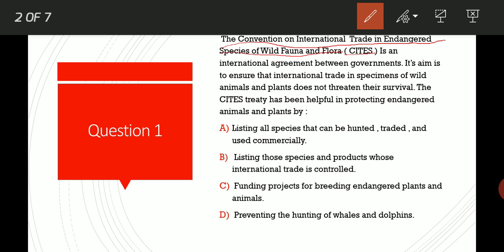The CITES trade treaty has been helpful in protecting endangered animals and plants by: listing all species that can be hunted, traded and used commercially; listing those species and products whose international trade is controlled; funding projects for breeding endangered plants and animals; or preventing the hunting of whales and dolphins. The correct option is Option B, listing those species and products whose international trade is controlled.